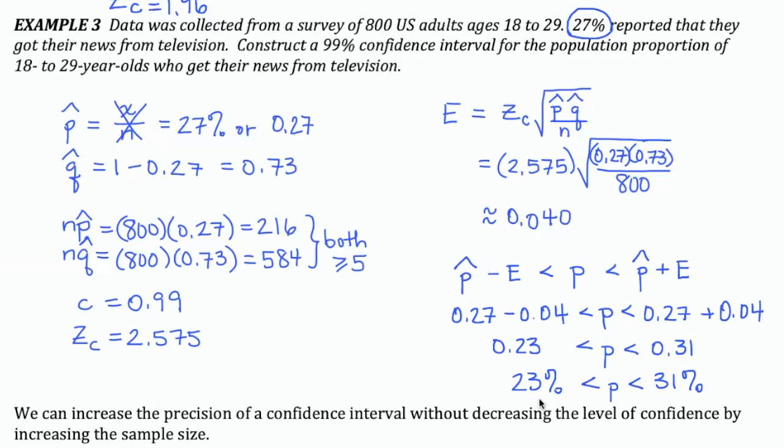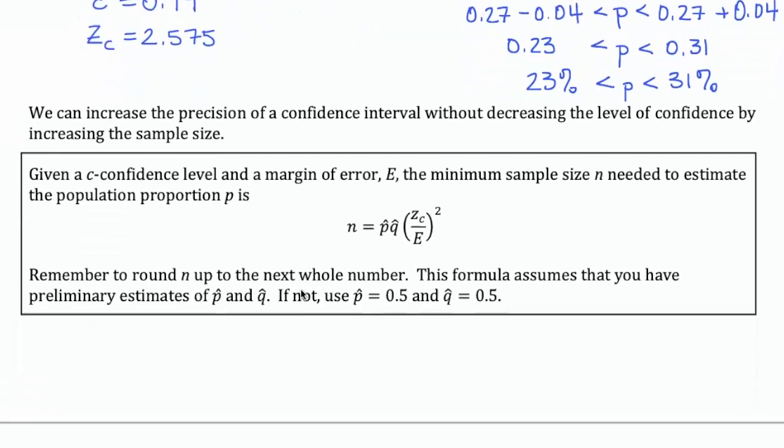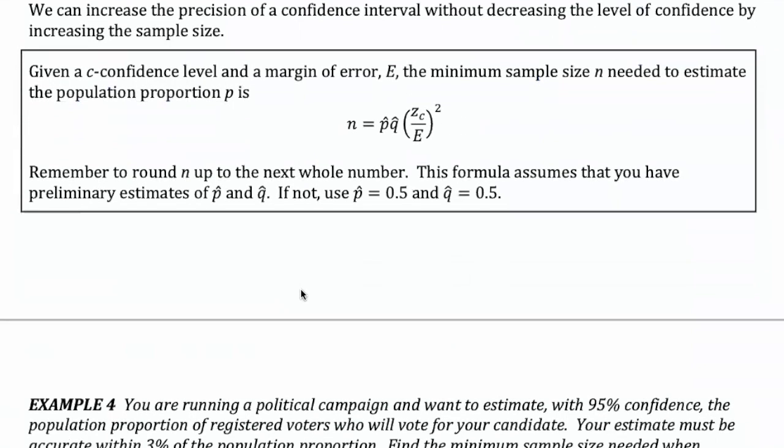And as always, we would like these two numbers to be really close together because then our answer would be more precise. So we can increase the precision of the confidence interval without decreasing the level of confidence by increasing the sample size. So just like in a previous section, we had a formula for the minimum sample size. We have a variation of that formula for the minimum sample size n that's needed to estimate a population proportion.